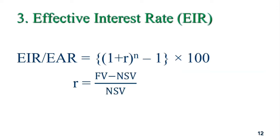Effective interest rate is: 1 plus r, raised to the power n, minus 1, into 100. Where r equals net cell value divided by net cell value, and n equals 360 divided by maturity.